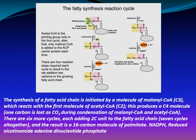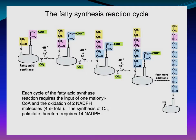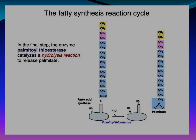The fatty acid synthesis reaction cycle: acetyl-CoA is the priming group only in the first cycle; after that, malonyl-CoA is added to the ACP carrier protein each time. There are four reaction steps required each cycle, resulting in the net addition of two carbons. Each cycle requires the input of one malonyl-CoA and the oxidation of two NADPH molecules. Synthesis of C16 palmitate therefore requires 14 NADPH. In the final step, palmitoyl thioesterase catalyzes a hydrolysis reaction releasing palmitate.